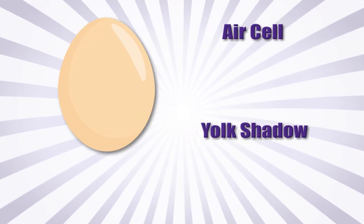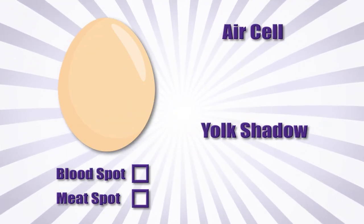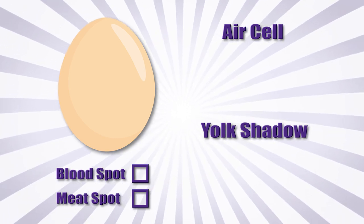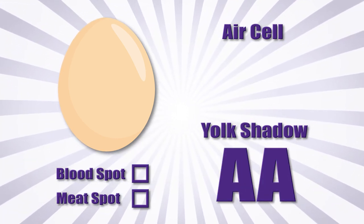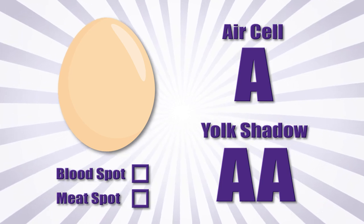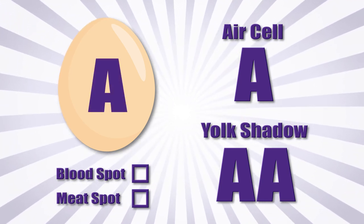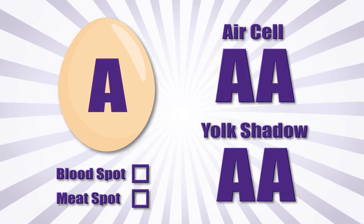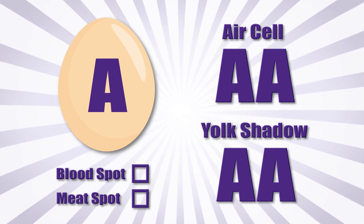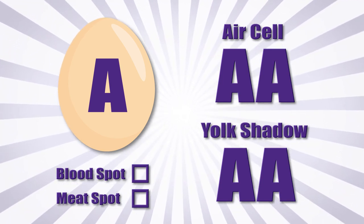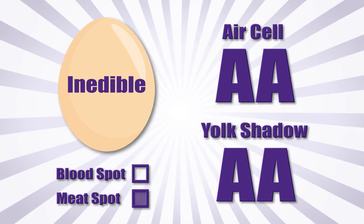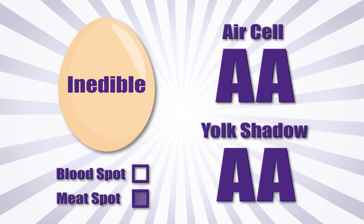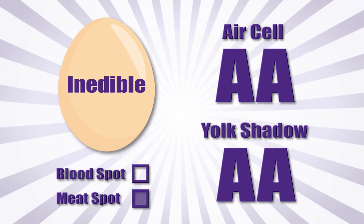After you check the air cell and yolk shadow and determine if there are any blood or meat spots present, then you must make your overall grading decision. If you have a AA yolk shadow but an A-sized air cell, then you must go with the lower grade. Another example would be an egg with a AA grade for yolk shadow and air cell but with a large meat spot. It would be considered inedible because the meat spot contributes the lowest grade. The lowest grade determines the egg's overall grade.